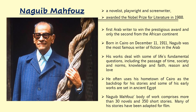He was born in Cairo, Egypt, which is located on the African continent, on December 11, 1911. His works deal with some of life's fundamental questions, including the passage of time, society and norms, knowledge and faith, reason and love. He often uses his hometown of Cairo as the backdrop for his stories, and some of his early works are set in ancient Egypt. Naguib Mahfouz's body of work comprises more than 30 novels and 350 short stories, and many of his stories have been adapted for film.